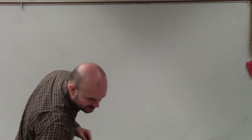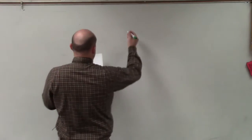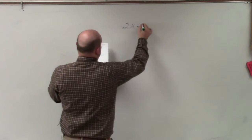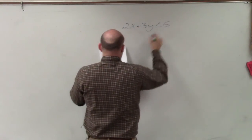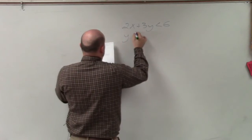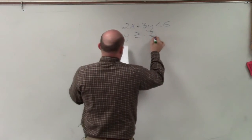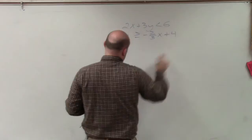All right, so students asked me to go ahead and graph 2x plus 3y is less than 6, and graph y is greater than or equal to negative 2 thirds x plus 4.